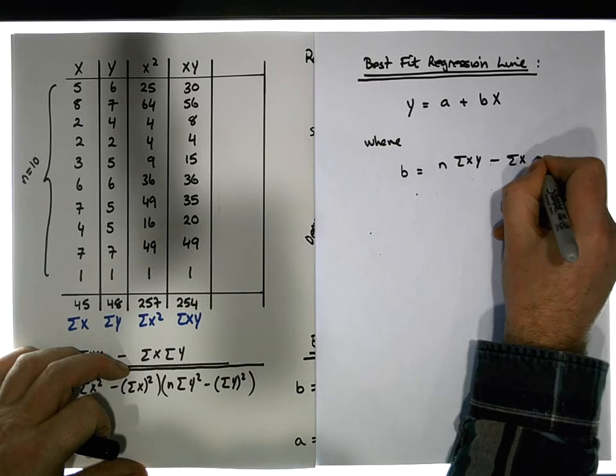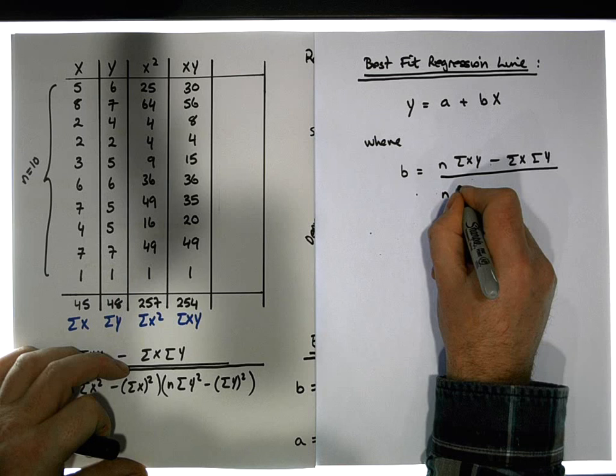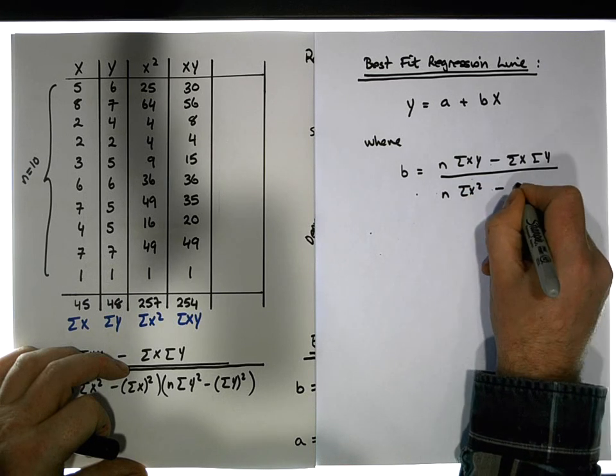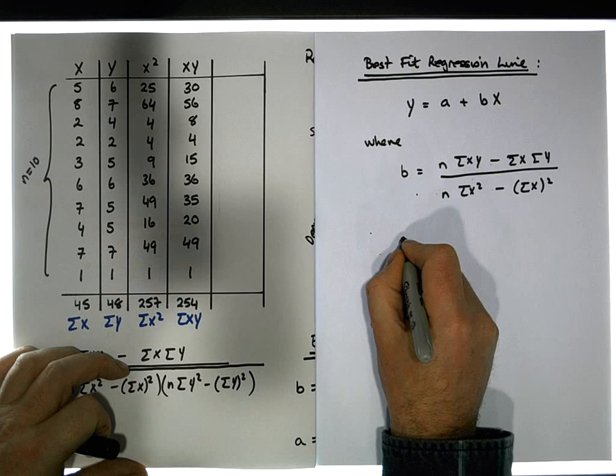minus the sum of the x's times the sum of the y's divided by n times the sum of the x squared terms minus the sum of the x's all to be squared. So in our case here we have b is equal to n.